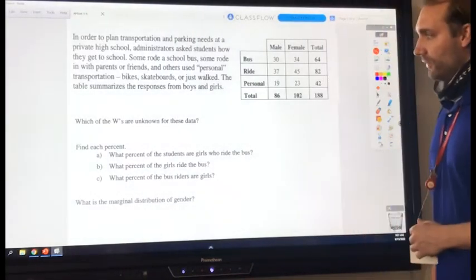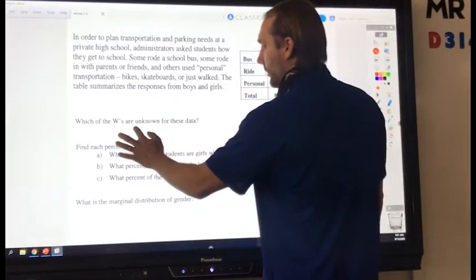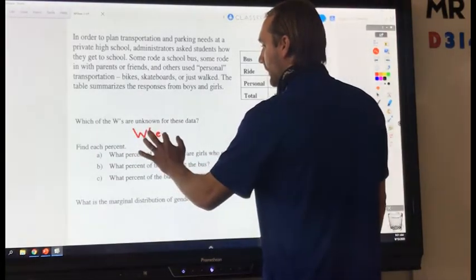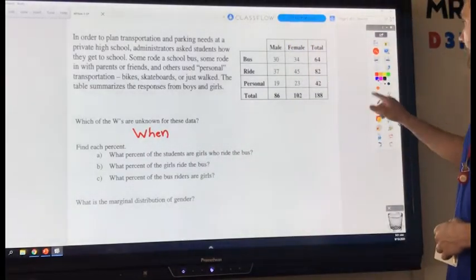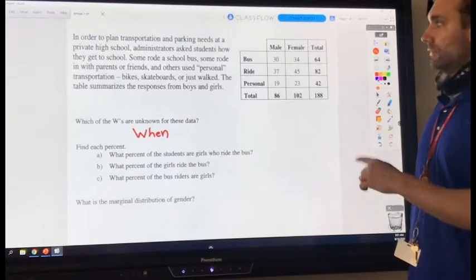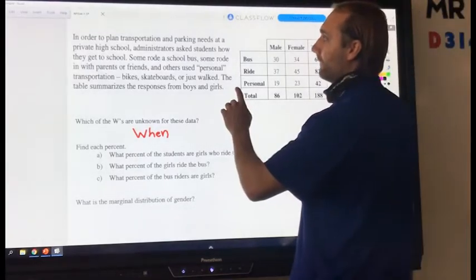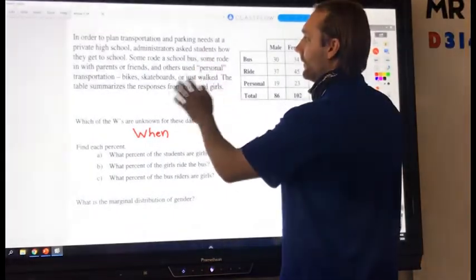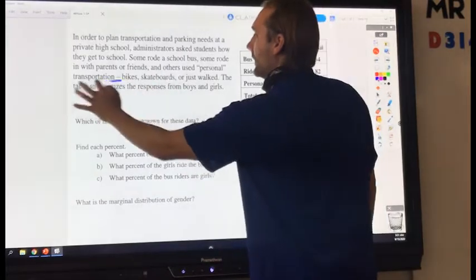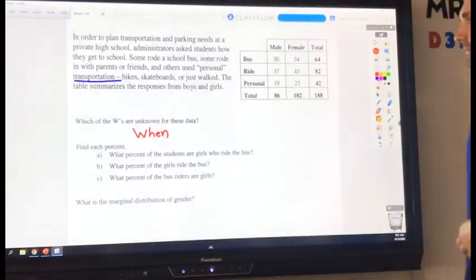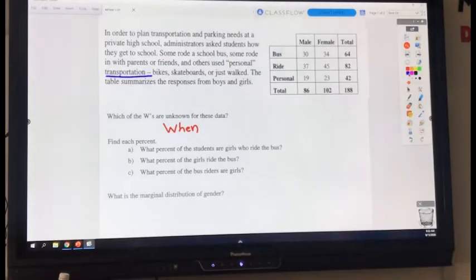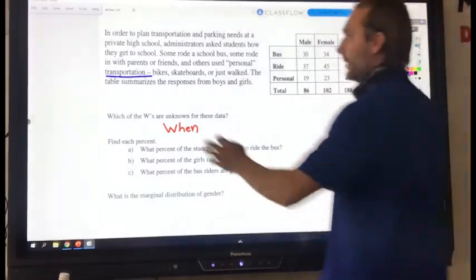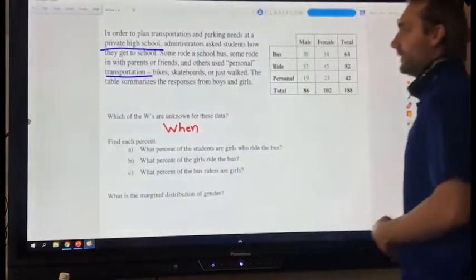Which of the W's are unknown for these data? The when. We don't know the when. What about the what? Do we know the what we're looking at? Or what we're looking for? Which is? Transportation. Yes. What modes of transportation the students took? Where? Do you know where? Okay. We don't know the exact private high school, but that's good enough.